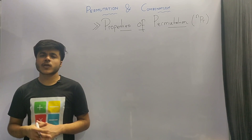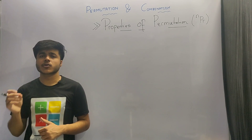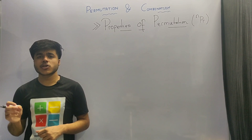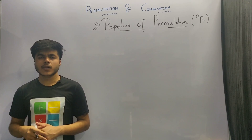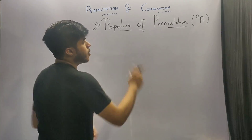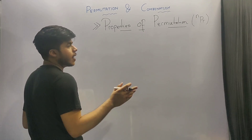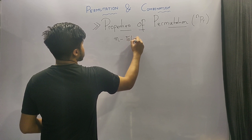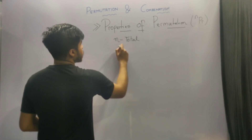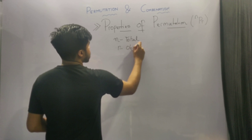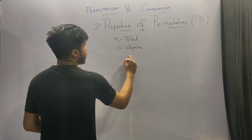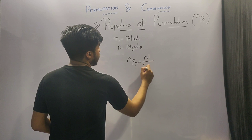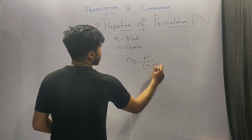That was all about factorial and its properties. Now let's move on to our second topic, permutation. Permutation is denoted by nPr where n is the total number of values and r is the total number of objects that we have to arrange. So nPr is written as n factorial upon n minus r factorial.